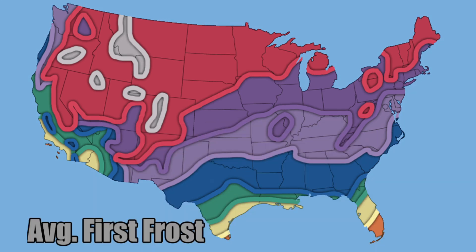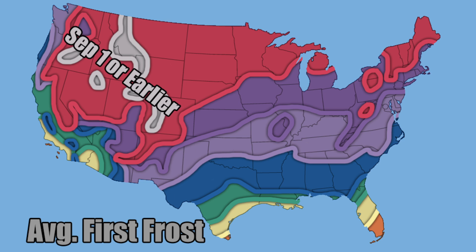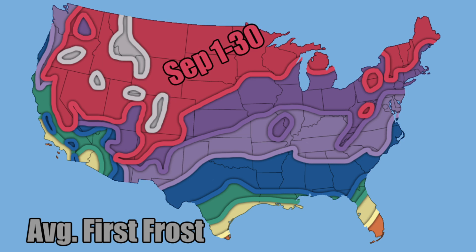Getting right into it — here's the map of average first frost. We're going to uncover what each individual layer indicates, showing you from north to south when we normally see our first frost. September 1st or earlier covers anywhere we're dealing with a first temperature below 36 degrees in August. Some of these areas see temperatures below 36 degrees almost year-round, mainly due to elevation — in parts of the Rockies in areas like Oregon, Nevada, Idaho, Montana, Wyoming, and Utah.